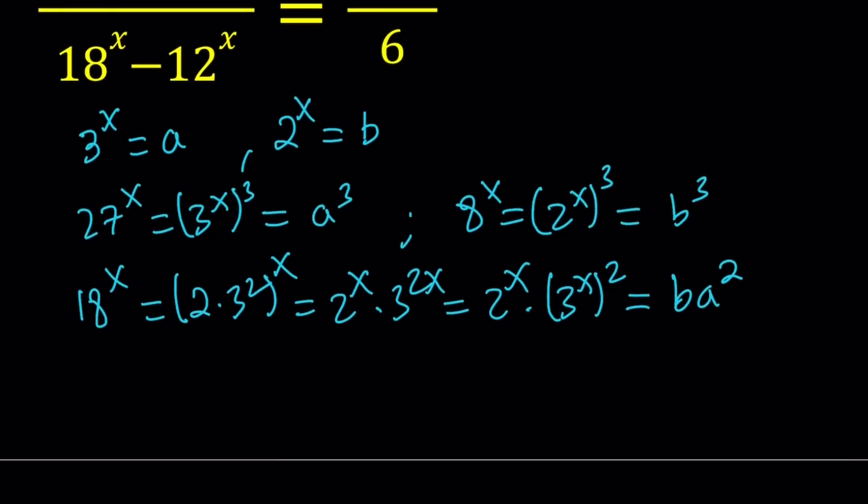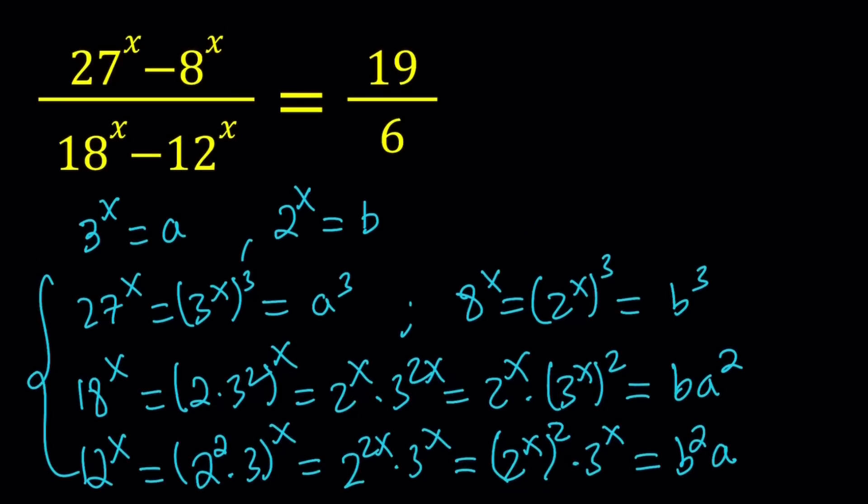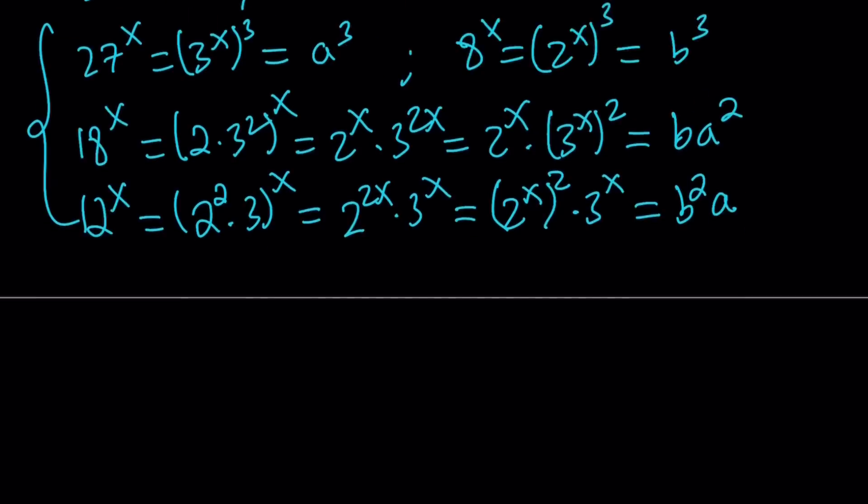We can do something similar for 12, but this time it's just going to be 2 squared times 3 to the x. That turns into 2 to the 2x times 3 to the x. We can write this as 2 to the x to the second times 3 to the x, and 2 to the x is b. This turns into b squared a. So all of this we can plug into our original equation. Let's see what happens.